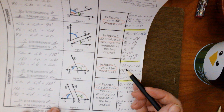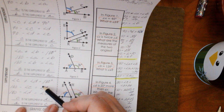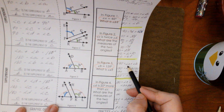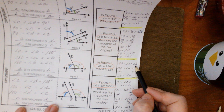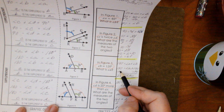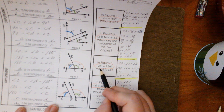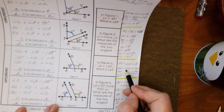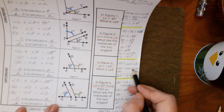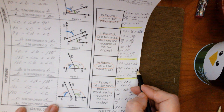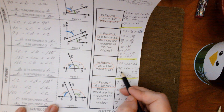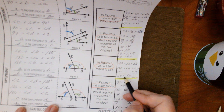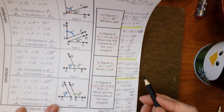Now we're doing the supplementary. 180 equals angle A plus angle B. We know that angle B is 120. So if we have 180 equals angle A plus 120, we subtract 120 from both sides, and 60 equals angle A.